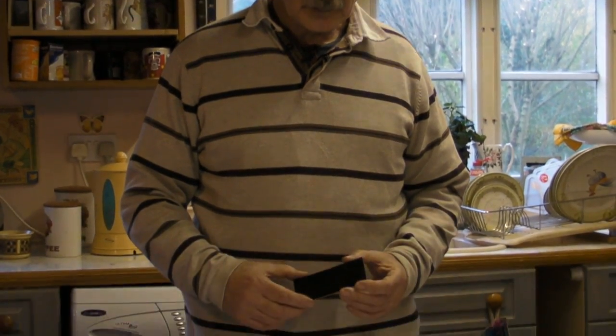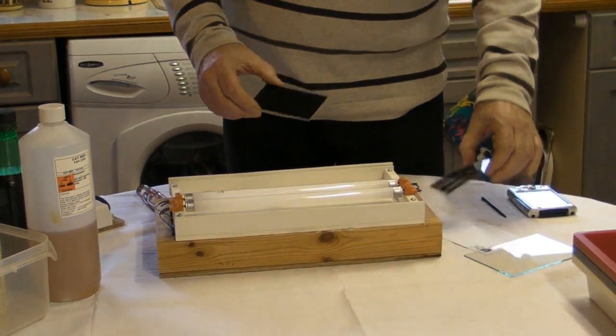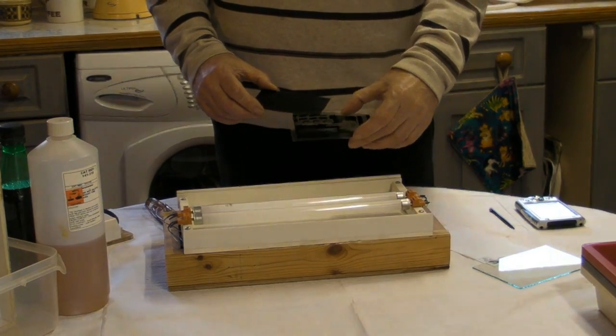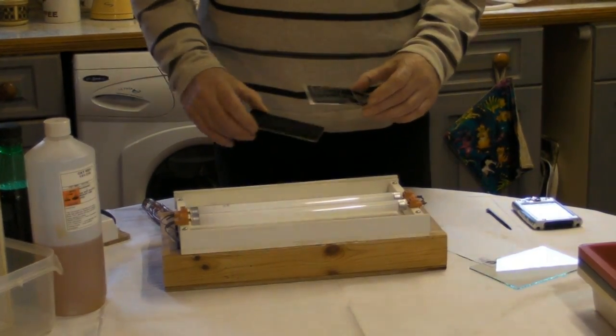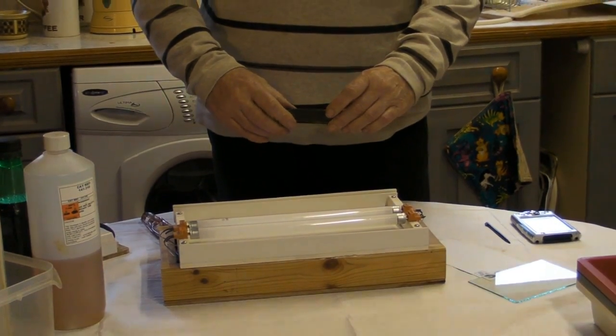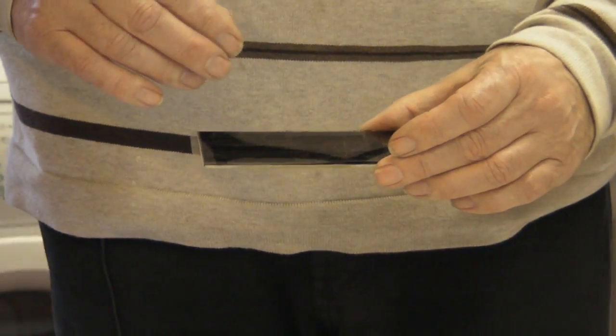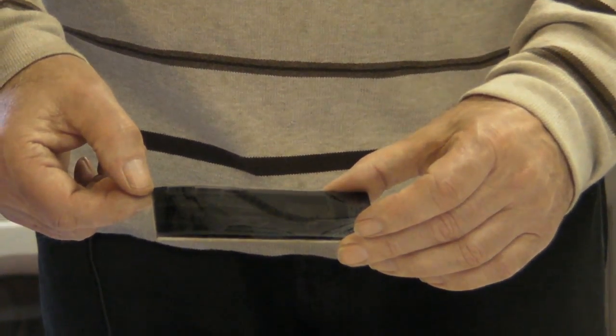So the first stage is to expose the photosensitive printed circuit boards using the ultraviolet light on the film. It's important to put the ink side actually against the board. Otherwise you won't get a nice sharp edge to the printed circuit board itself, the tracks, and they could be blurred slightly as well.